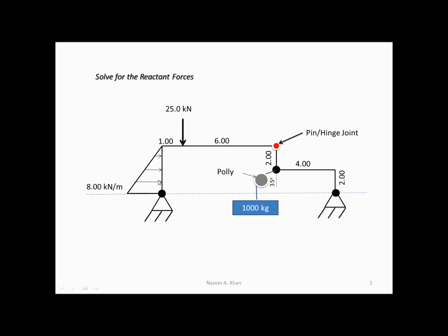I have to put that point load through the centroid of this particular triangle. The centroid happens one third in each direction from the right angle. The right angle is right there. One third of the height — because this will be a horizontal force — will be one third of 4, which is 1.33 from the base to that force. We know the force will be 16.